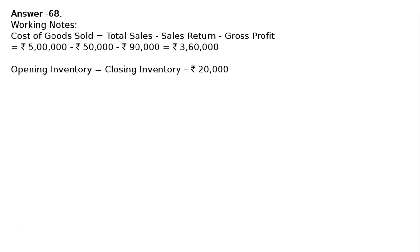Opening inventory is equal to closing inventory minus 20,000. It is written in the question that closing inventory is Rs. 1 lakh and excess of closing inventory over opening inventory is Rs. 20,000. Hence, out of the closing inventory, if we deduct Rs. 20,000, we can find opening inventory. That is Rs. 1 lakh minus 20,000, that is Rs. 80,000.